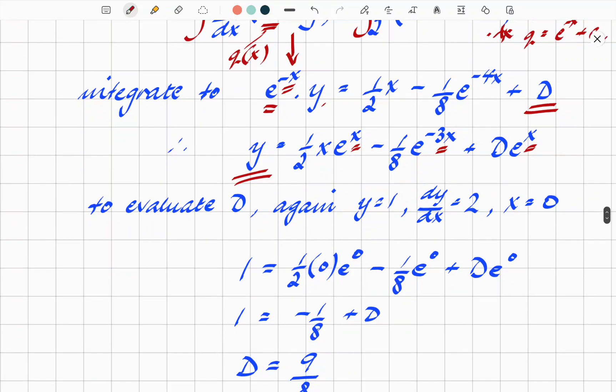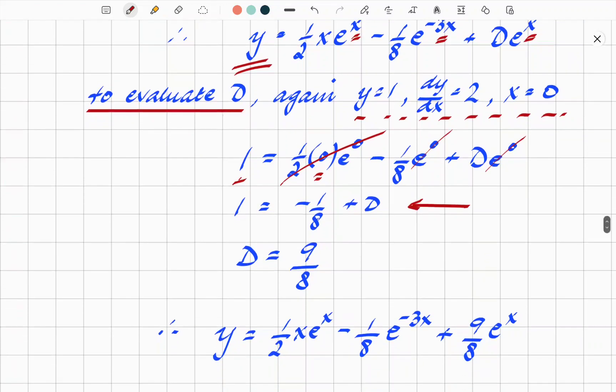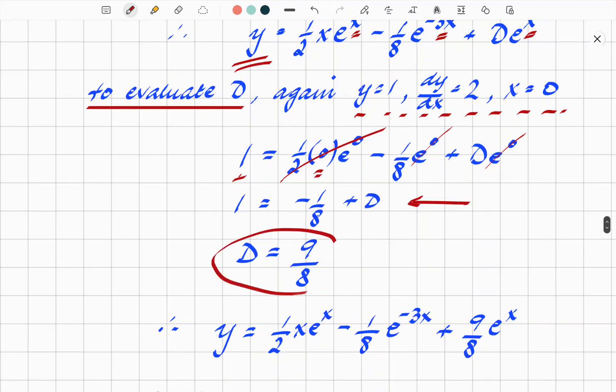Last part of the question, to evaluate D. What we need here, remind ourselves again of the initial conditions: y = 1, dy/dx = 2, and x = 0. Just substitute the values in. y = 1 and x = 0, so that term goes out, and you've got -(1/8)e^0 goes out both times, and you're left with a simple expression, and D = 9/8.